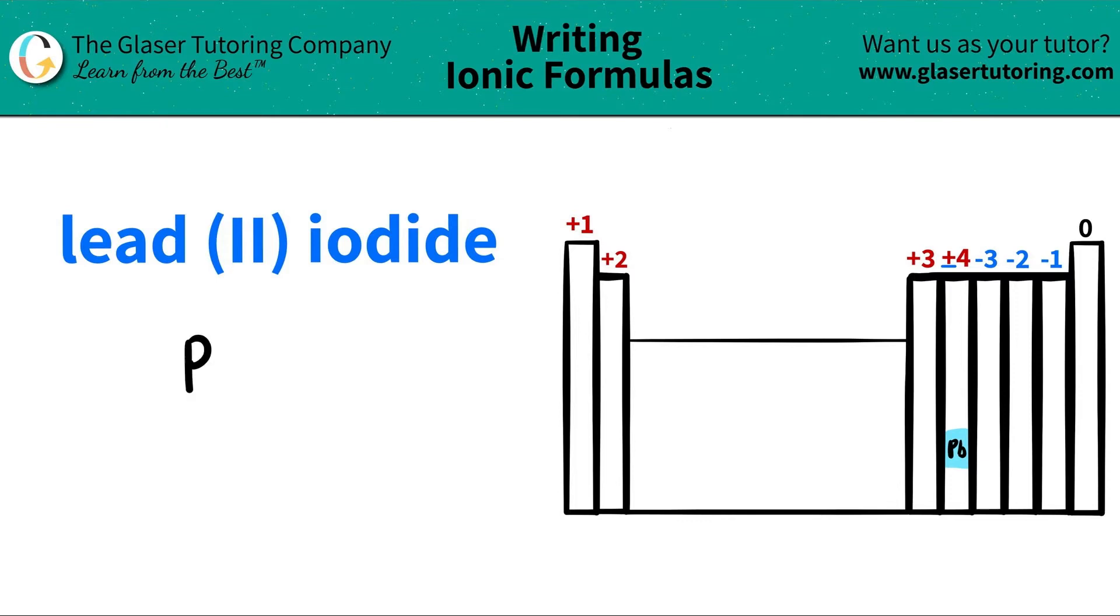So I know that I have Pb, but I would star this element out, guys, because even though Pb is not in this block, I still see that I have a Roman numeral. So with lead, don't go by the trend because the Roman numeral might tell you different.